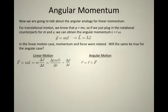In the angular motion case, we know that the analog of force is torque, and torque is R cross F. Well, if F is Δp over Δt, we can say that torque is equal to R cross that ratio.